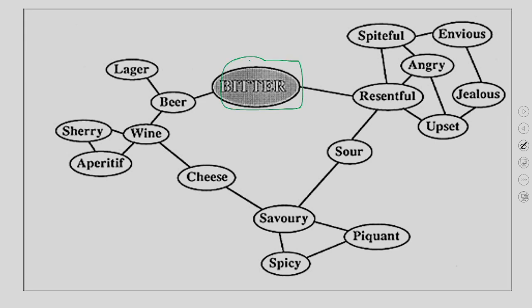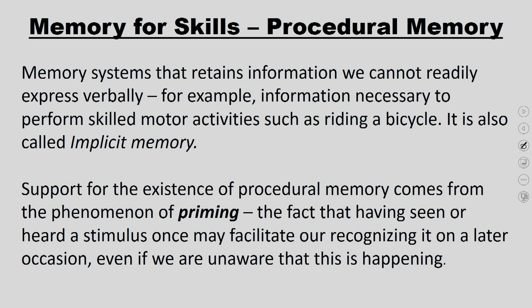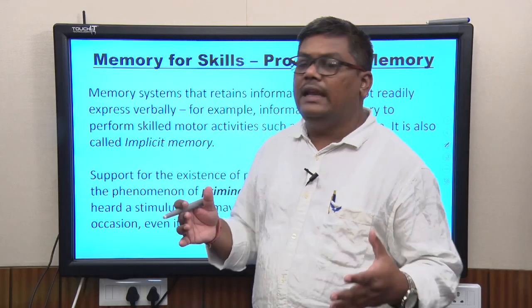The concept 'bitter' is related to beer on one side and to the emotion resentful on the other. Beer further links to lager, ale, and wine, which links to cheese, and wine and cheese are both related to savoury, nitrous, spicy, and piquant qualities. This gives a definition of how things are related and organized in semantic memory. For more details, refer to the full lectures in the cognitive psychology course.